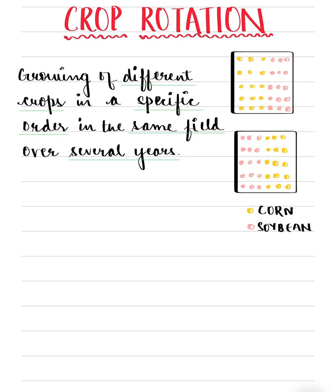When a single crop is grown in one field for many years in a row, the crop will cause depletion of particular nutrients in the soil. The depletion of nutrients leads to poor plant health and lower crop yield.